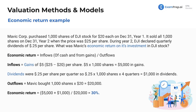Let's go through an example. What's the economic return on DJI stock? Mavic Corp purchased 1,000 shares of DJI stock for $20 each on December 31st, Year 1, and sold all 1,000 shares on December 31st, Year 2 when the price was $25 per share. During Year 2, DJI declared quarterly dividends of $0.25 per share — and since this is quarterly, we'll need to multiply by four.